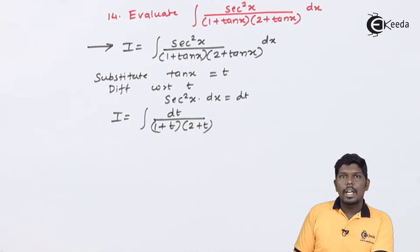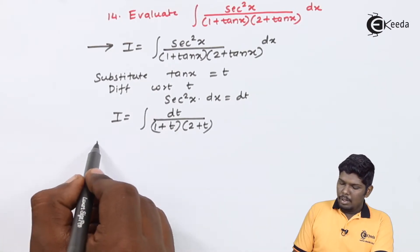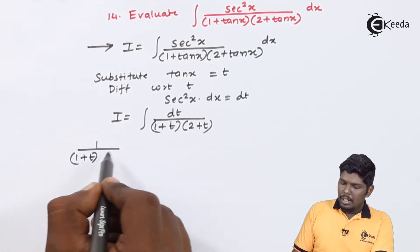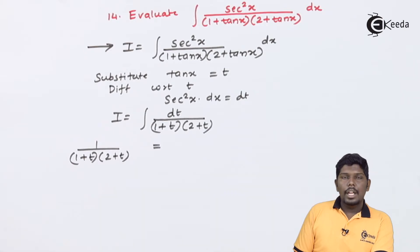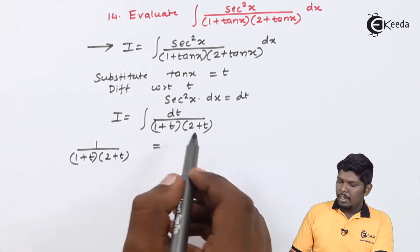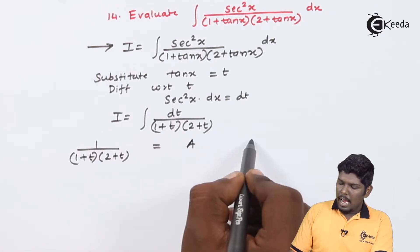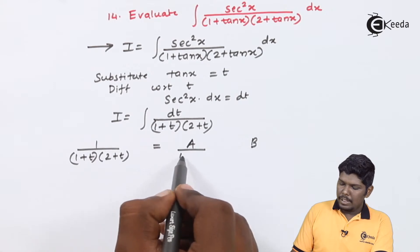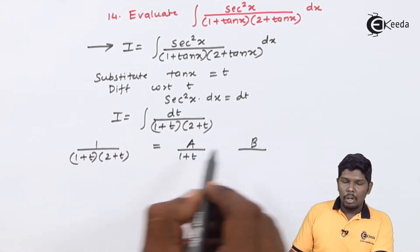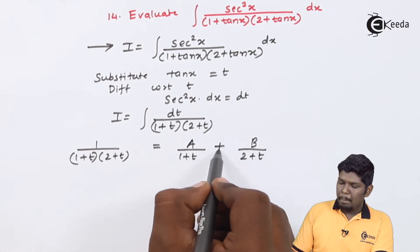This integration is under integration by partial fractions. Considering 1 upon (1 + t)(2 + t), we will convert this into 2 different fractions. Let us assume the 2 different fractions are A and B, where the denominator of A will be (1 + t) and the denominator of B will be (2 + t), both separated by a plus sign.